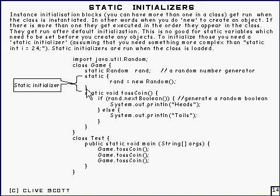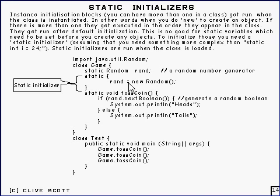That thing there is the static initializer. And when this class is loaded up into memory, that's when that gets run. What happens first is that gets set to null initially, because it's initialized to null before that's run. Then that gets run and it gets overwritten with a reference to this random number generator class.